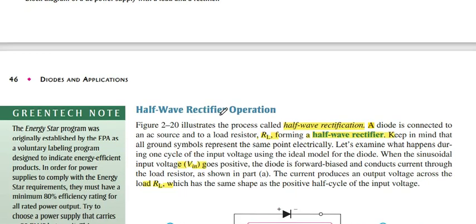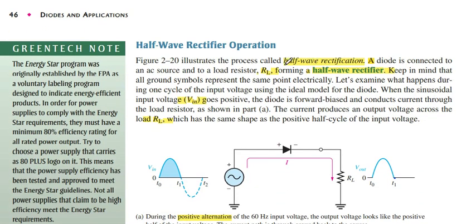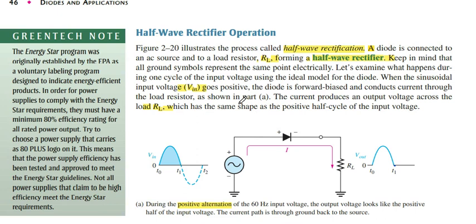Now in the half wave rectifier: we give an AC voltage and a diode which converts this voltage into a waveform that only has the positive half cycle. As the positive cycle — how it works: Vin is the voltage that we give to the diode.